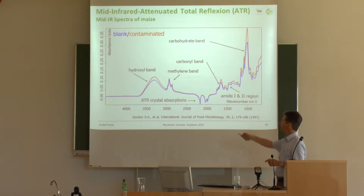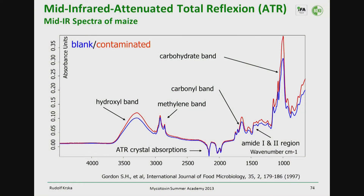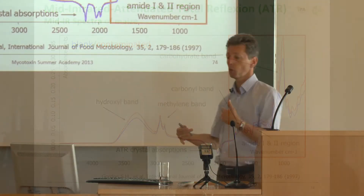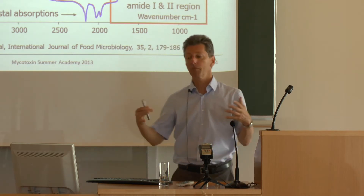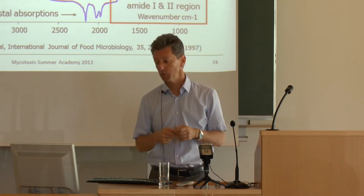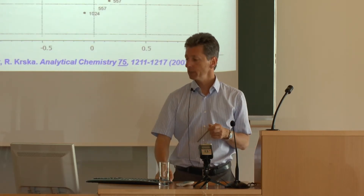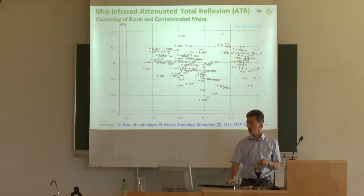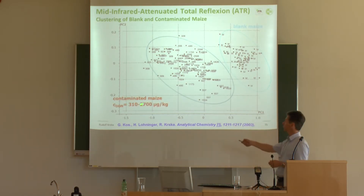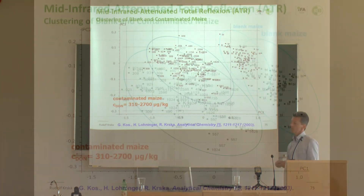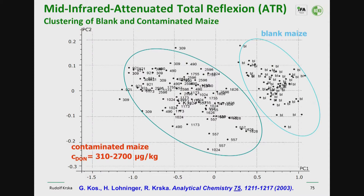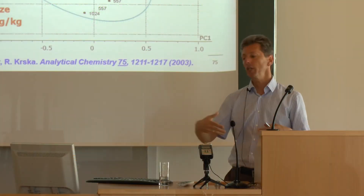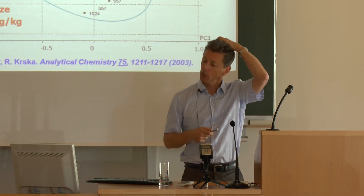A blank sample shown in blue and a contaminated sample shown in red look essentially the same — you see nothing different visually. You therefore need chemometric evaluation by looking into the carbohydrate bands, carbonyl bands, and the amide region, which corresponds to protein. Once a toxin or fungus is present, the protein content and composition of the material may change. Remarkably, through chemometric evaluation you can distinguish blank maize from contaminated maize down to 300 µg/kg. We lost previous funding because the light sources were not strong enough, but a new generation of mid-infrared quantum cascade lasers will now be used to further develop this methodology.